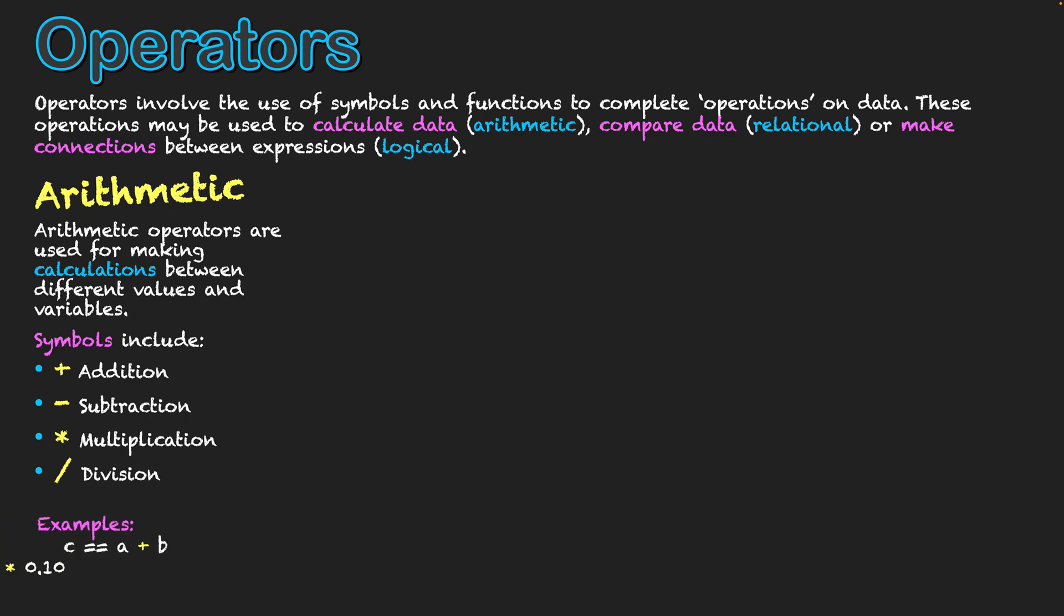So some examples include, if we had variables just as simple letters, C is equal to A plus B. So whatever values A and B are, when they're added together, that will equal C. And then we've got profit equals price times 0.10. That will times the price by 10%, showing a company potentially how much profit they'd be making on a product when it's put at a specific price point with a 10% profit on top.